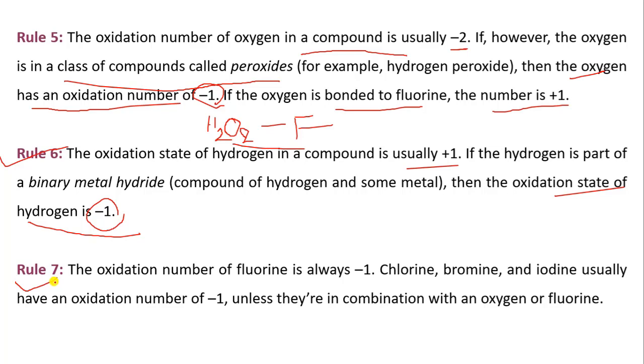Now rule 7. The oxidation number of fluorine is always minus 1. Chlorine, bromine, and iodine usually have an oxidation number minus 1. We can say halogens have an oxidation number of minus 1, unless they are in combination with oxygen or fluorine. If it is in a combination, then it will change.